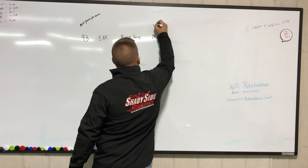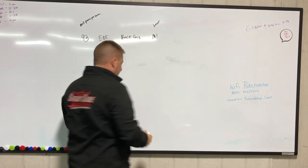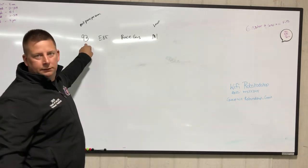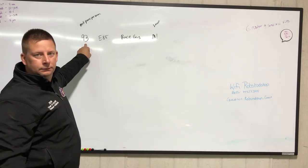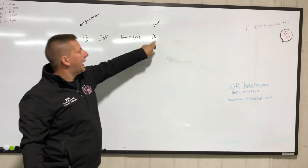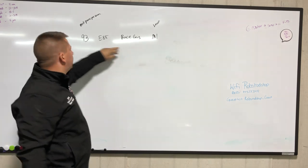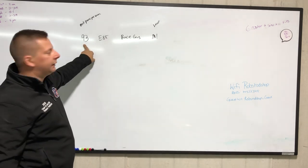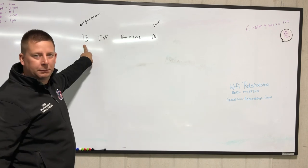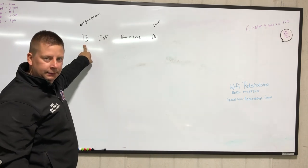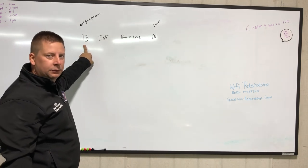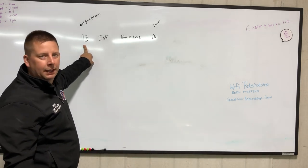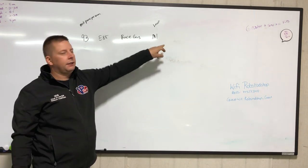This has the least. That's why it takes twice as much of this to make the same power as this. This has almost half the potential energy stored in it as 93 does. Race gas has less potential energy than 93 does. E85 has less potential energy per gram than 93 does.